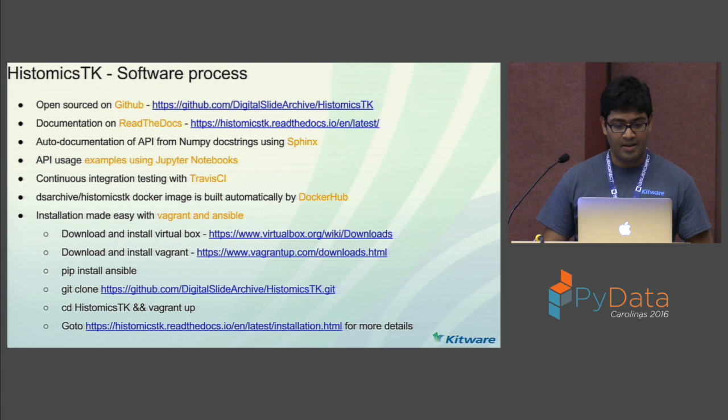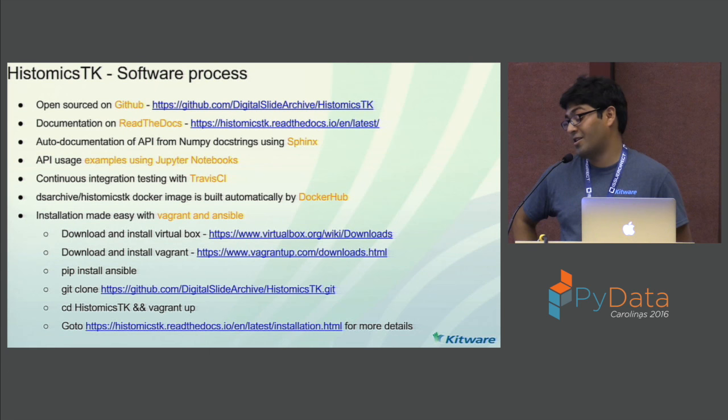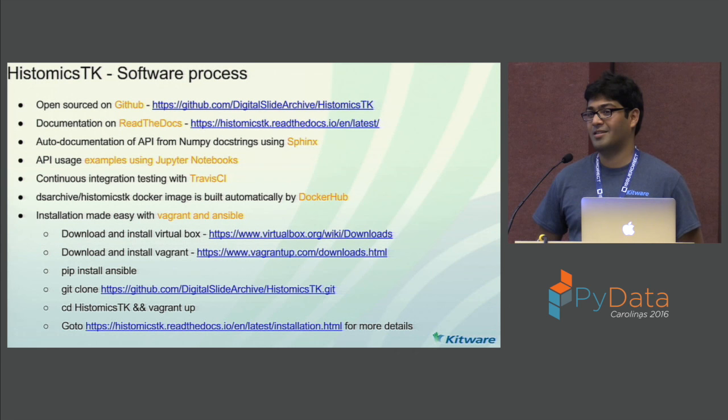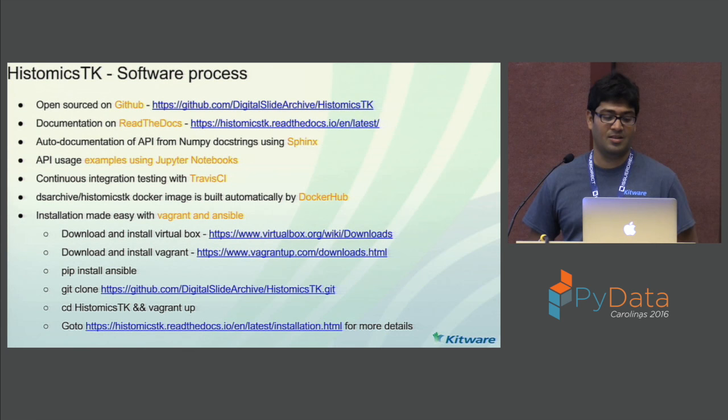Lastly, some software process details. HistomicsTK is on GitHub. We have documentation on Read the Docs and are working on more. We haven't made our official release yet — we are waiting on improving code coverage a bit. We are at about 60% code coverage and want to improve it more. We use tools to automatically generate API documentation from docstrings, and there are usage examples using Jupyter notebooks on Read the Docs. We use Travis CI for continuous integration and Vagrant and Ansible to ease the installation process.